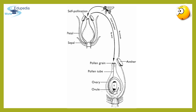If the transfer of pollen grains occurs from the anther to the stigma of the same flower — remember, the same flower — then it is called autogamy. However, if the transfer occurs to a different flower but of the same plant — remember, same plant — then it is called geitonogamy. Cross-pollination refers to the transfer of pollen grains from the anther to the stigma of a different flower of another plant. With this, we come to an end of the revision of our previous lectures.